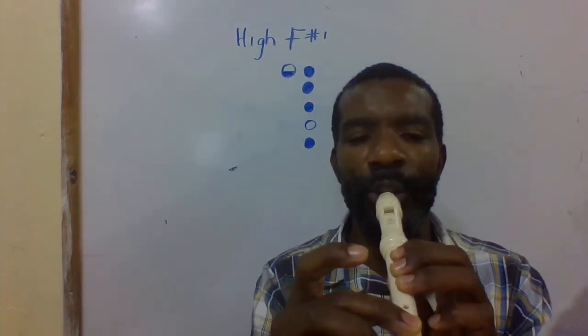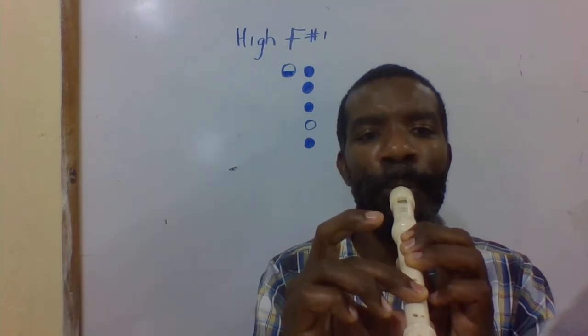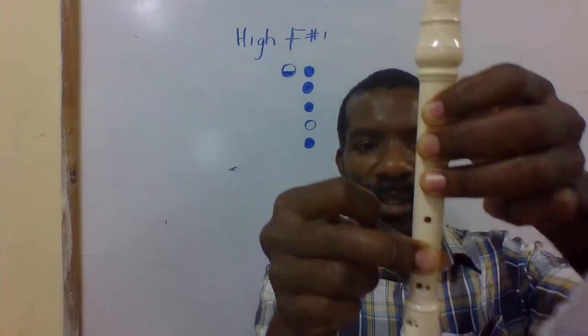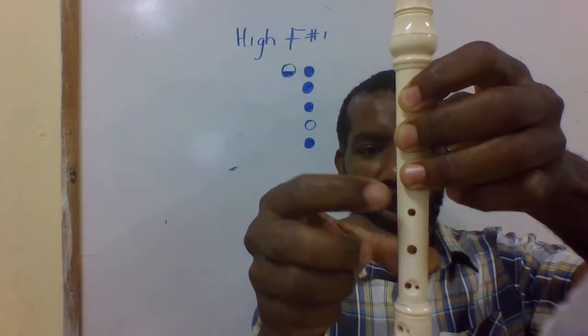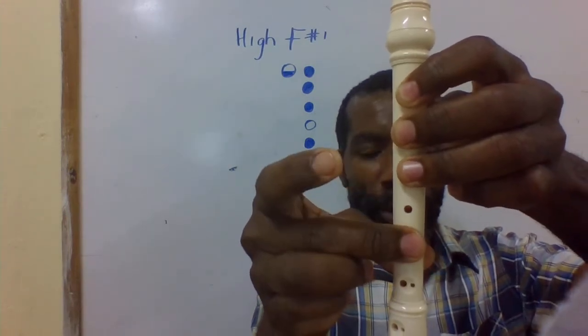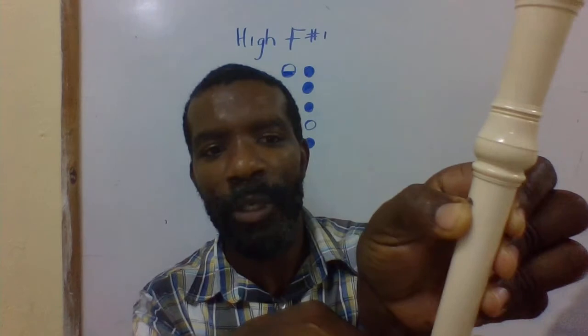This is how it should sound. That's high F sharp: one, two, three, skip one, cover, half cover the thumb.